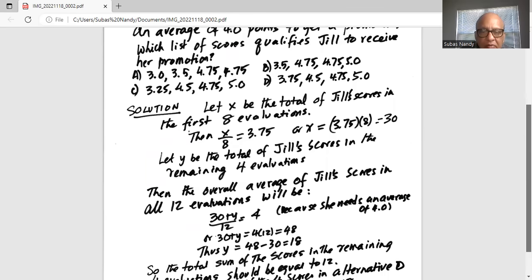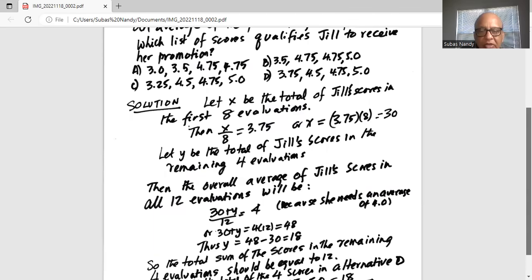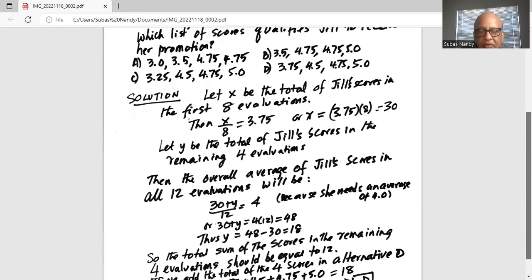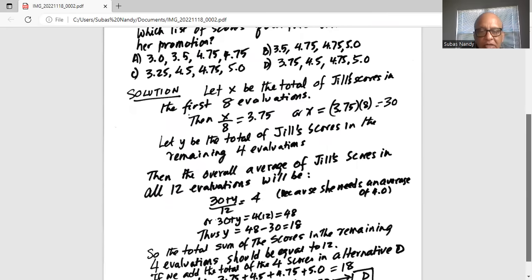Then we multiply by 12 on both sides to get 30 plus y equal to 4 times 12, which is equal to 48. Then we subtract 30 from both sides to get y equal to 48 minus 30 equal to 18.